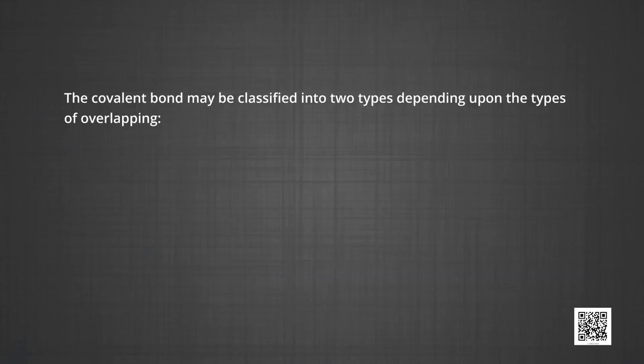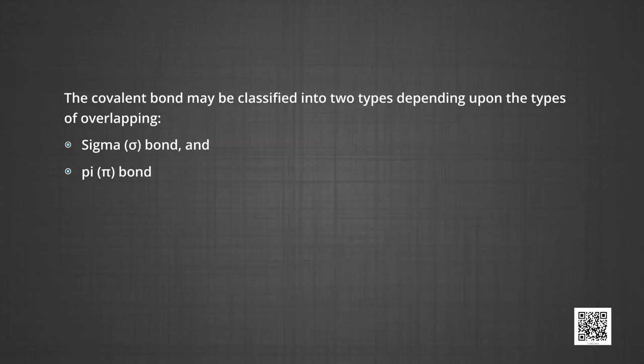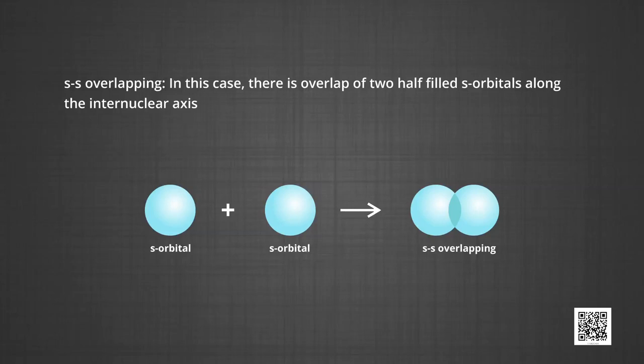Types of overlapping and the nature of covalent bonds: covalent bonds may be classified into two types depending upon the type of overlapping. The first is the sigma bond and the second is the pi bond. A sigma bond is formed by the end-to-end or head-on overlap of bonding orbitals along the internuclear axis — also called axial overlap. This can be formed by the following combinations: s–s overlapping, where two half-filled s orbitals overlap along the internuclear axis.